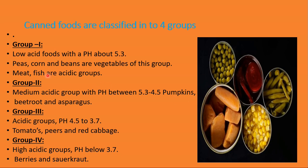Group one is low acidic foods with a pH of about 5.3, including peas, corns, beans, vegetables, meat, and fish. Group two is medium acidic with pH ranging from 5.3 to 4.5, with examples like pumpkins, beetroots, and asparagus. Group three is acidic with pH from 4.5 to 3.7, including tomatoes, peas, and red cabbage. Group four is highly acidic with pH below 3.7, including berries and apricots.